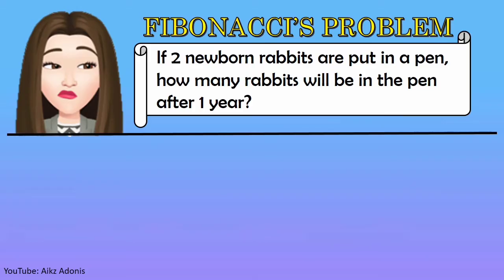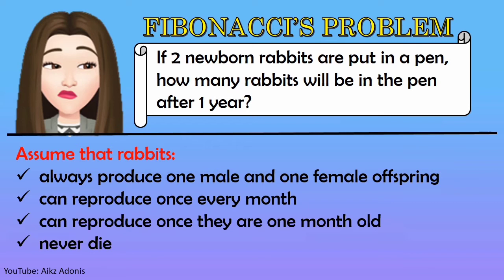Now let's investigate the problem further. If two newborn rabbits are put in a pen, how many rabbits will be in the pen after one year? Assume that rabbits always produce one male and one female offspring, can reproduce once every month, can reproduce once they are one month old, and they never die.